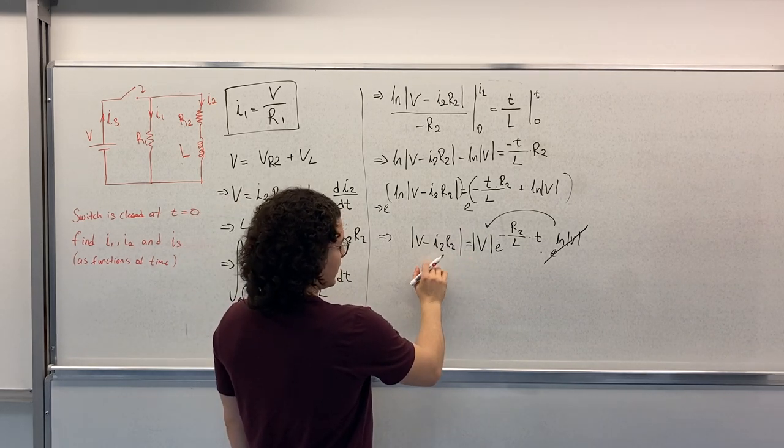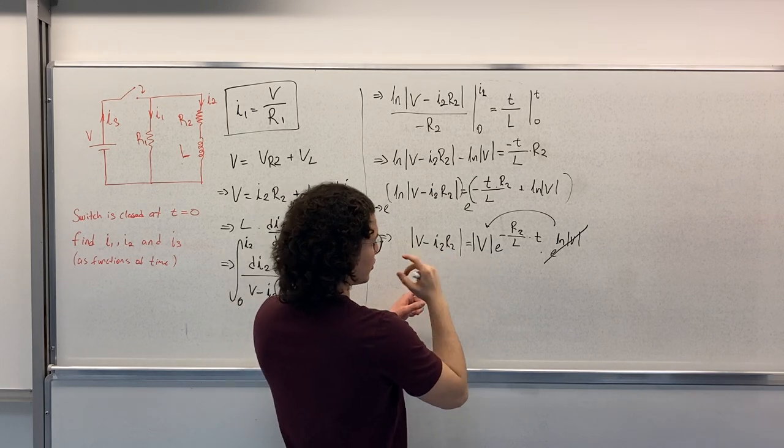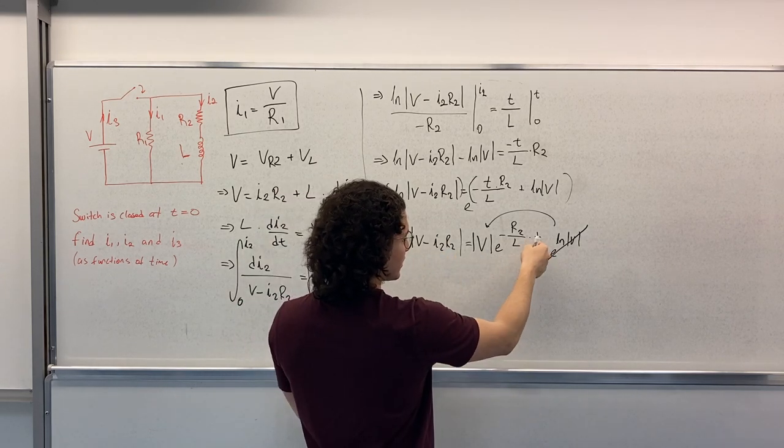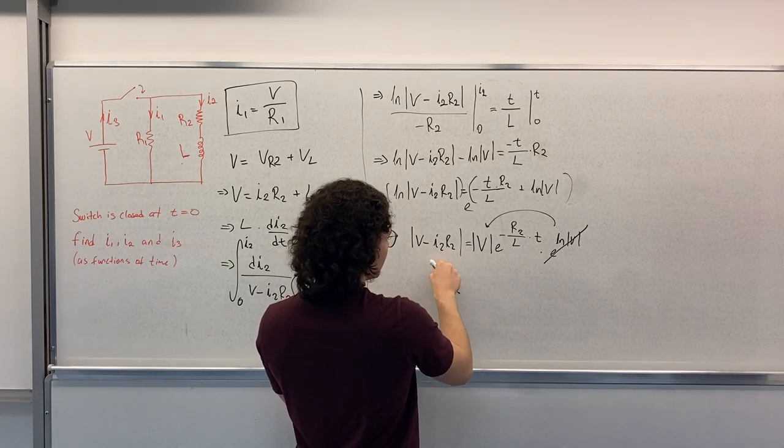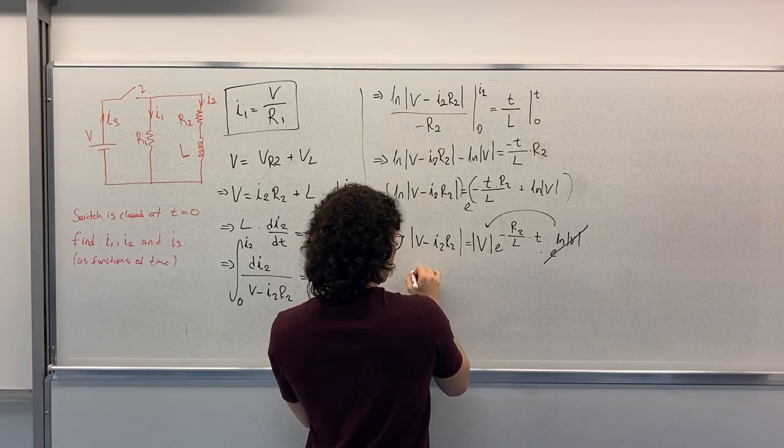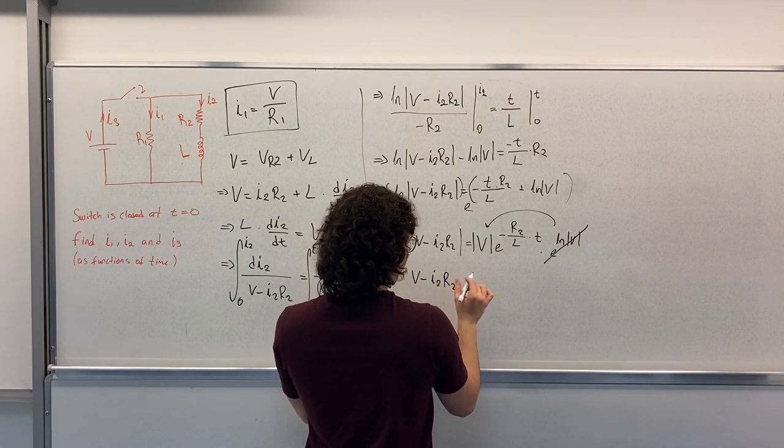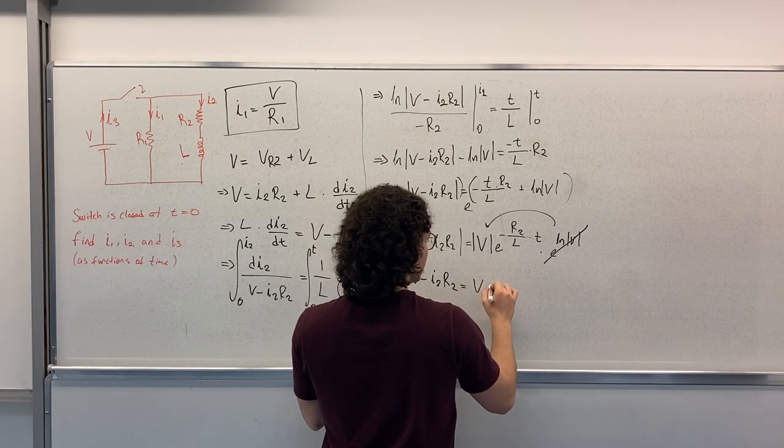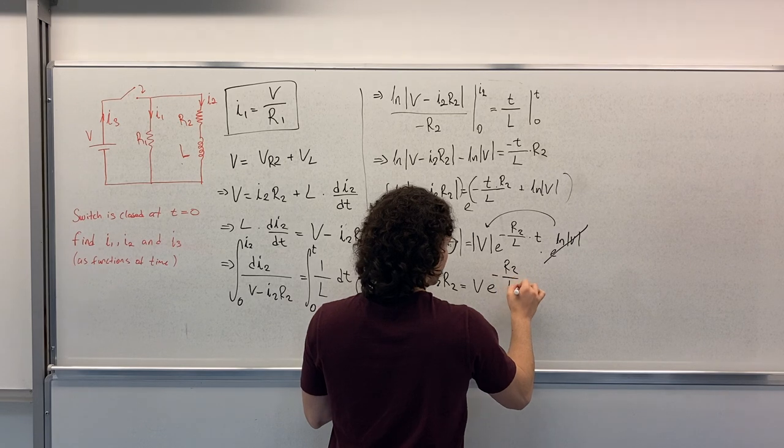So from this we can see if we substitute the initial conditions, this gives us 1. We have V here. This is 0. So we can write V minus I2 R2 is equal to V e to the power minus R2 over L times T.